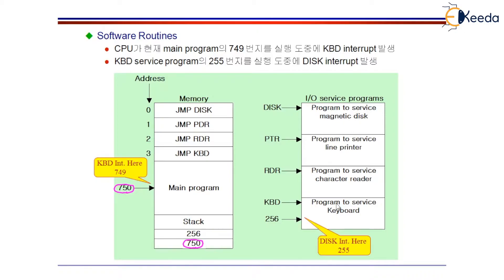Here you can clearly see — let us look at this space. This is the total main memory. There is a disk service routine from this location to this location. There is a printer service routine available from this location to this location, and the reader service routine from this location to this location. And the keyboard service routine is available from this location to this location.